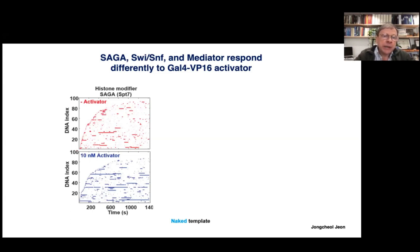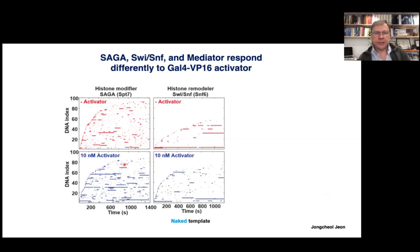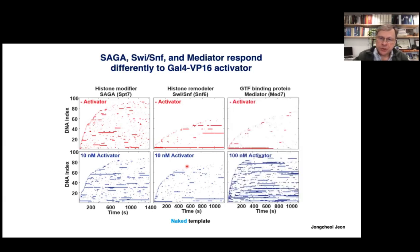All experiments shown today are done without NTPs — we're looking at assembly but not allowing transcription to proceed. The first coactivator we looked at was SAGA, and we got an interesting result: we expected SAGA recruitment to be completely dependent on the activator, but it actually binds quite similarly in the presence or absence of activator, with only subtle differences in duration time. SWI/SNF shows something different — the on-rate is clearly increased in the presence of activator. Mediator also shows a very strong increase with activator, and binding events tend to be much longer in duration.